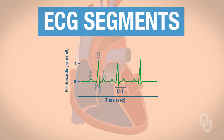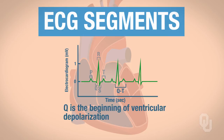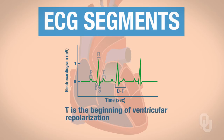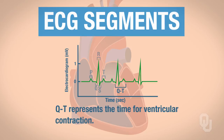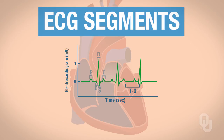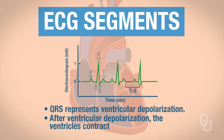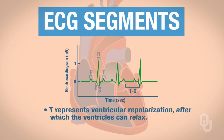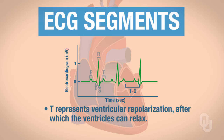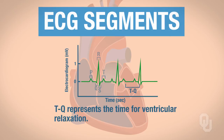Now let's look at the Q-to-T segment. Q is the beginning of ventricular depolarization, and T represents ventricular repolarization. So Q-to-T represents the time for ventricular contraction. The last segment is the T-to-Q segment. QRS represents ventricular depolarization, after which the ventricles contract. T represents ventricular repolarization, after which the ventricles can relax. So T-to-Q represents the time for ventricular relaxation.